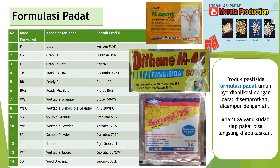Formulasi padat. Ini contoh dari produk formulasi padat, ada Regen, Ditan, dan Saromil. Kode formulasi yang pertama: D, kepanjangan kode DUS, contoh produk Perigen 0,5D. Yang kedua, GR kepanjangannya Granul, contoh produk Furadan 3GR.